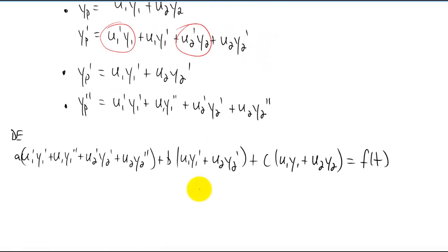Alright, I plugged everything in here and it is pretty ugly looking. I would like to group some terms together at this point. I would like to group the u1 terms together and I would like to group the u2 terms together. So when I group the u1 and u2 terms together, I'm going to factor out the u1 and the u2. So I want to get something that looks kind of like this right here.